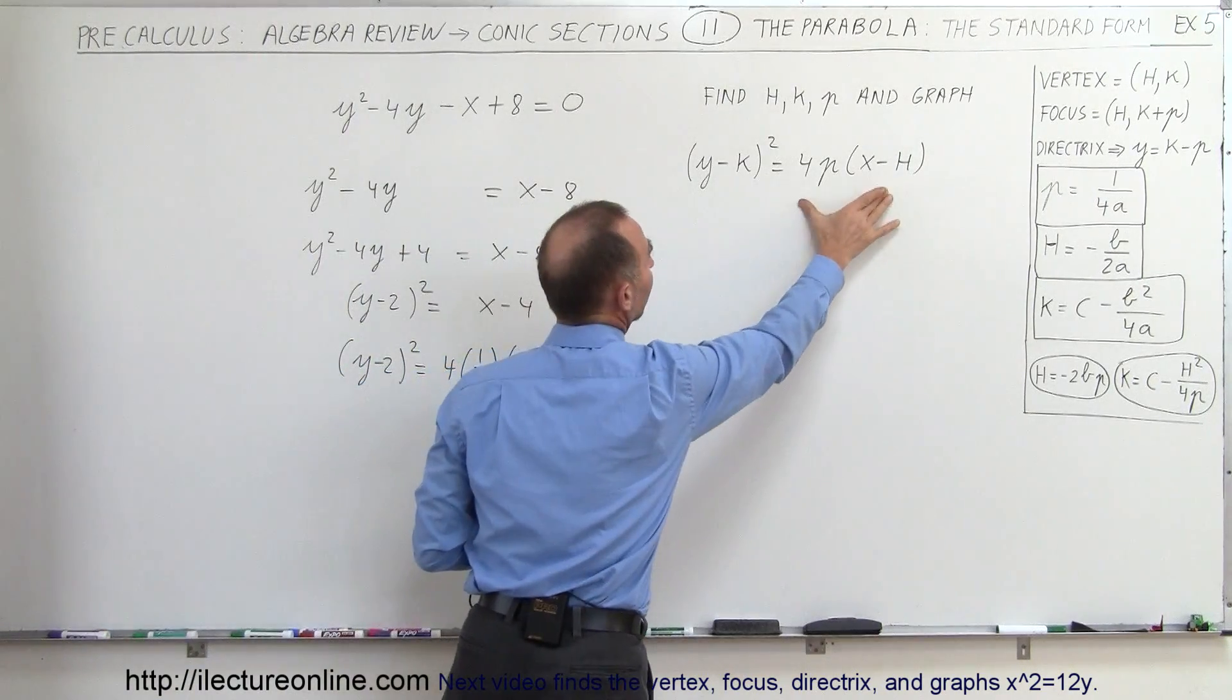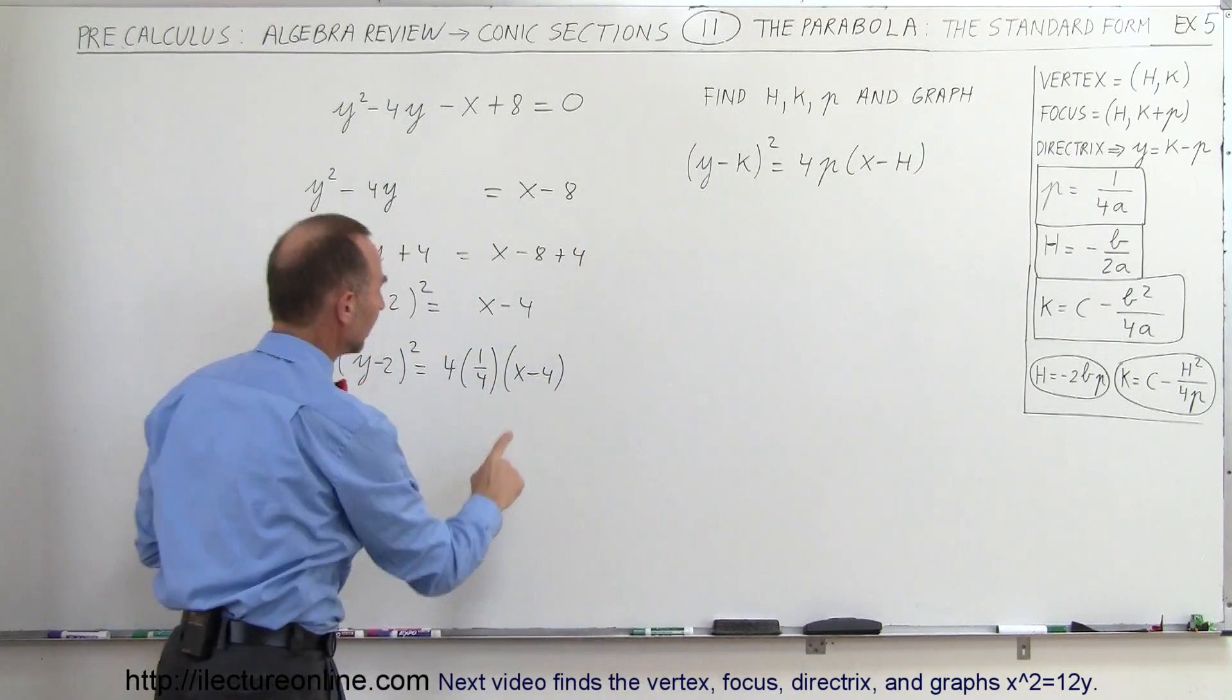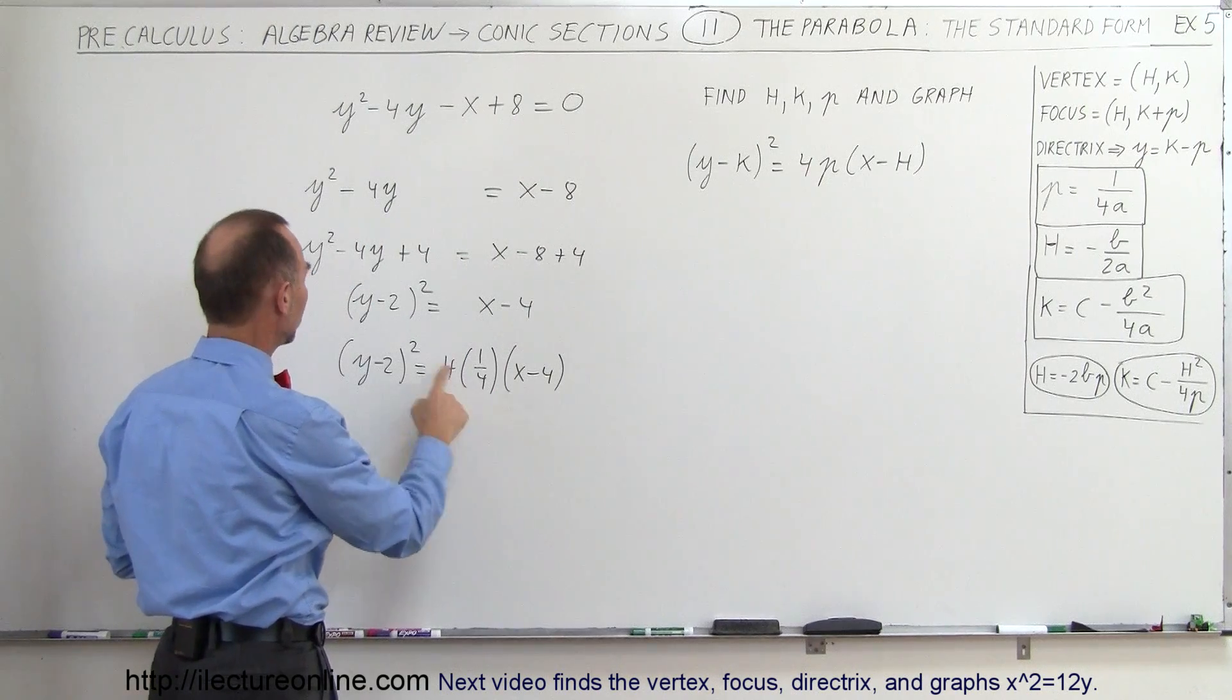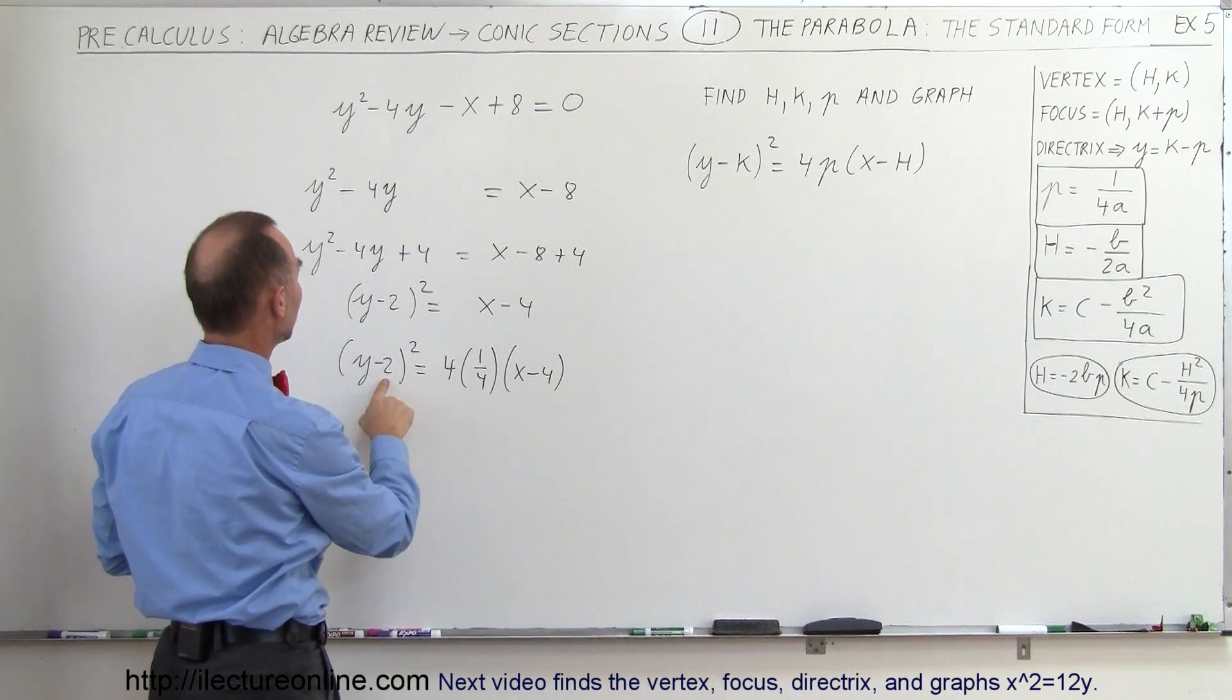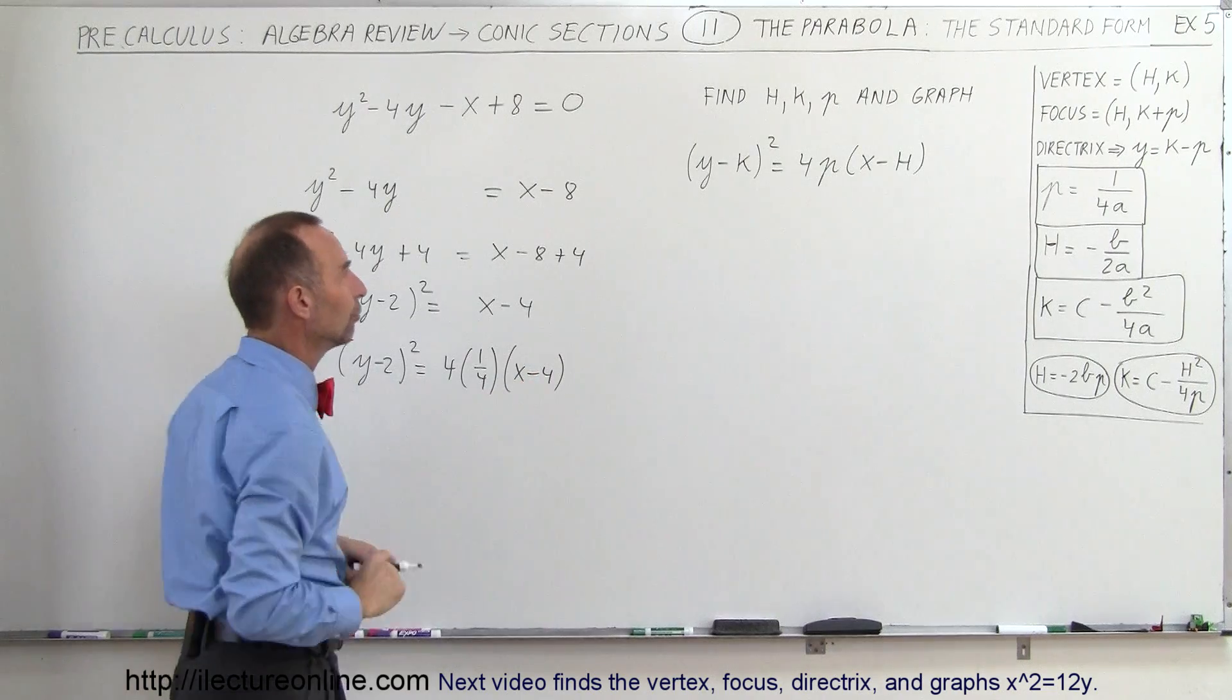But we want to write it in this form right here so we can clearly tell that p in this case is equal to 1/4. We know that k is equal to 2 and h is equal to 4.